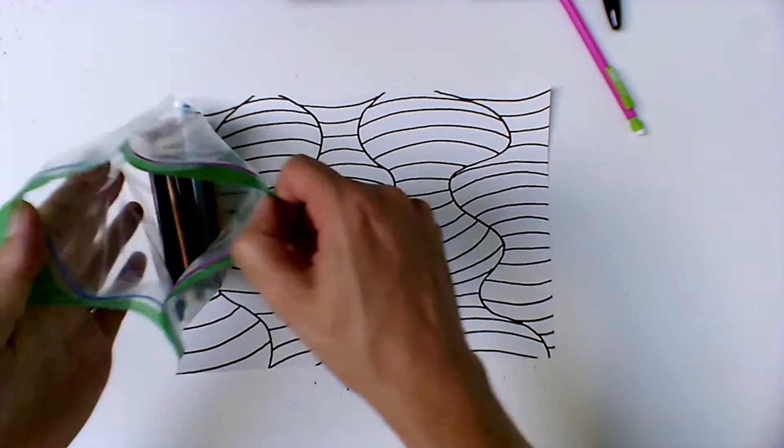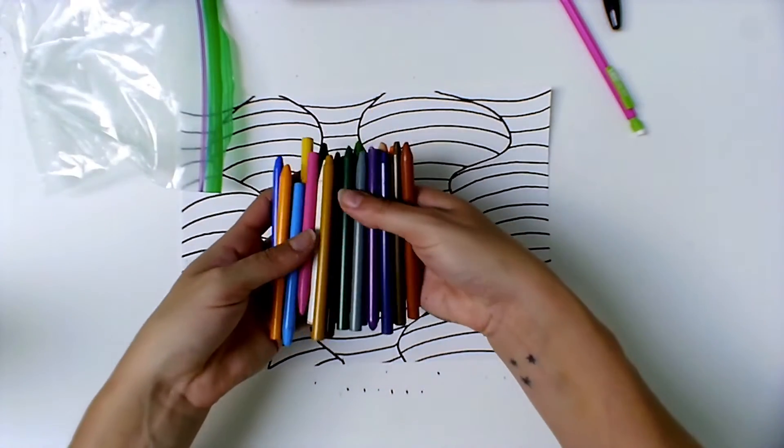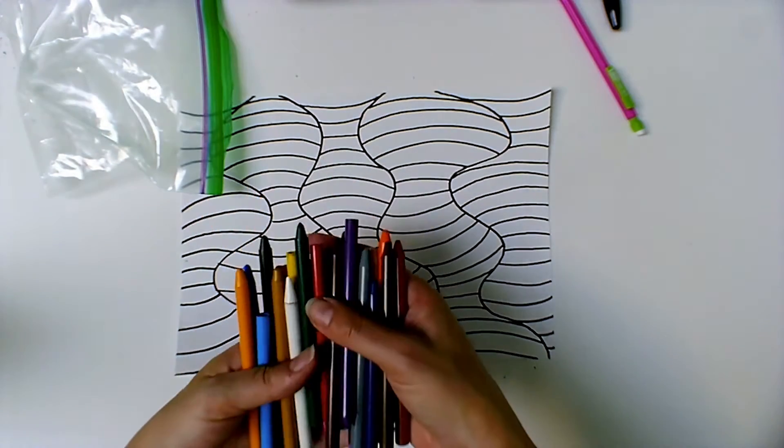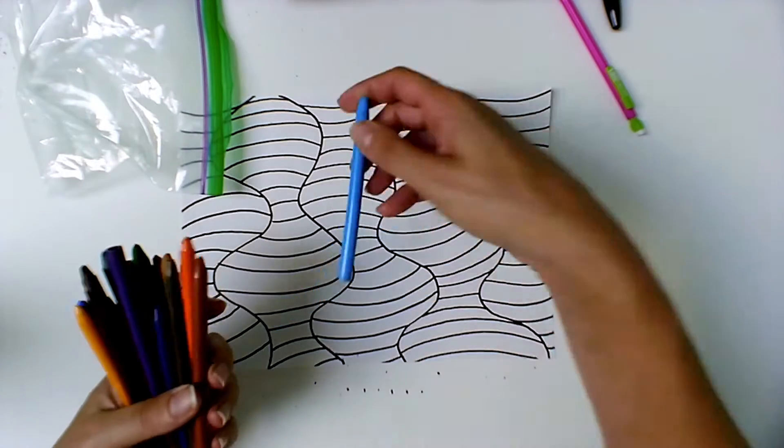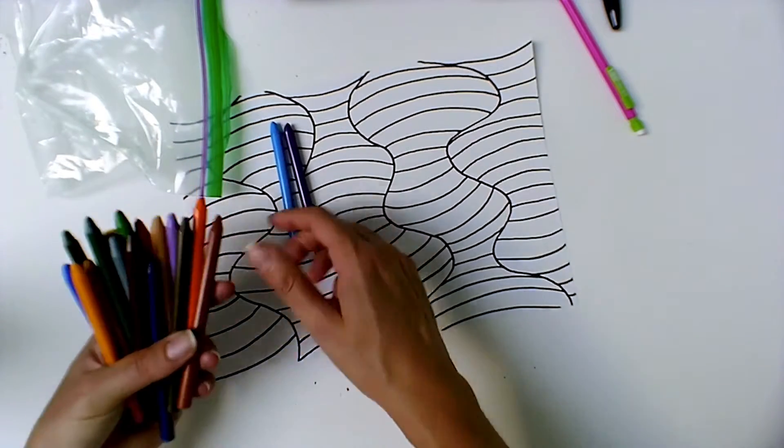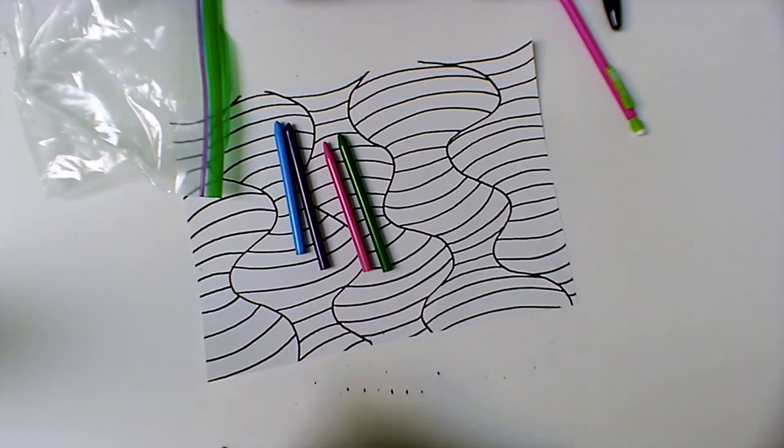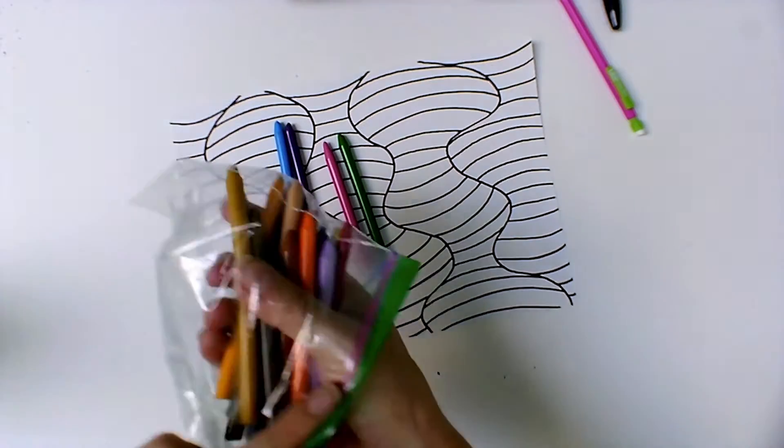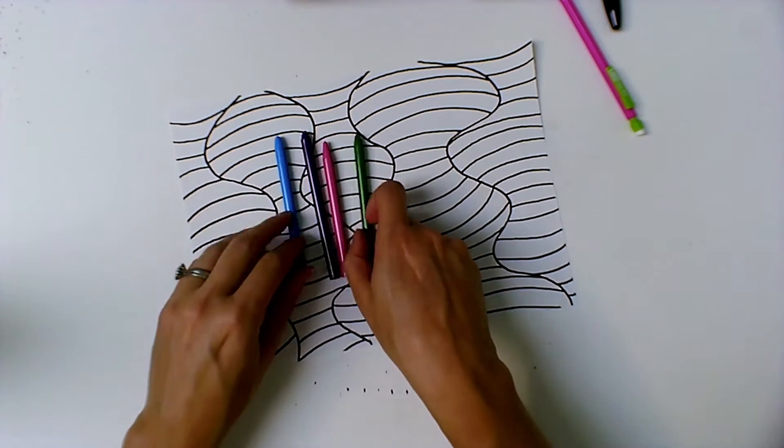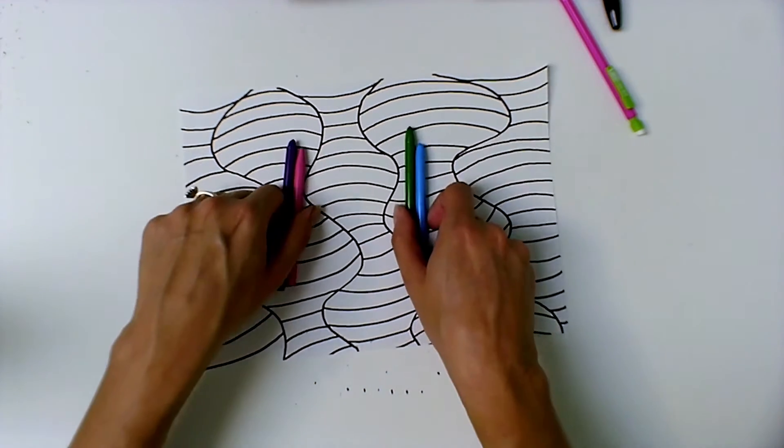To color this in we're going to start off with these color sticks which are basically just woodless colored pencils and you're going to pick four colors to use. And then with these four colors you're going to make a pattern so you're going to put them in two sets of two.